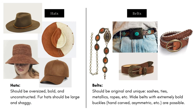Hats should be oversized, bold, and unconstructed. Fur hats should be large and shaggy. Here we have textured pieces and bold patterning in a brown and white contrasted look; suede is also great. Belts should be original and unique — wide belts with extremely bold buckles that feel hand-carved or asymmetric are possible. You want that artistic, unique, one-of-a-kind feel, or alternatively lean into very simple and bare styles.